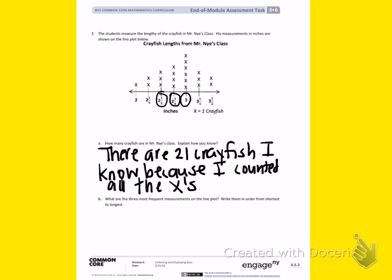Then I'm going to take those numbers and write them in order from the shortest length to the longest length. I'm talking about inches. So of those three numbers I circled, two and one-half inches is the shortest, two and three-fourths inches is the next shortest, and three inches is the longest.